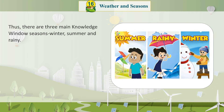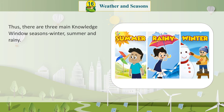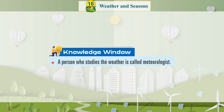Thus, there are three main seasons: winter, summer and rainy. A person who studies the weather is called a meteorologist.